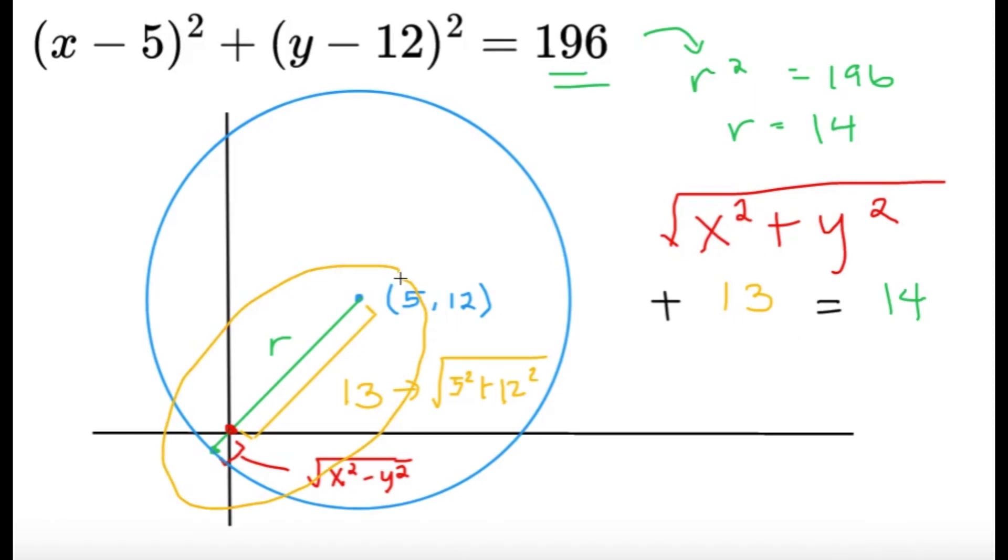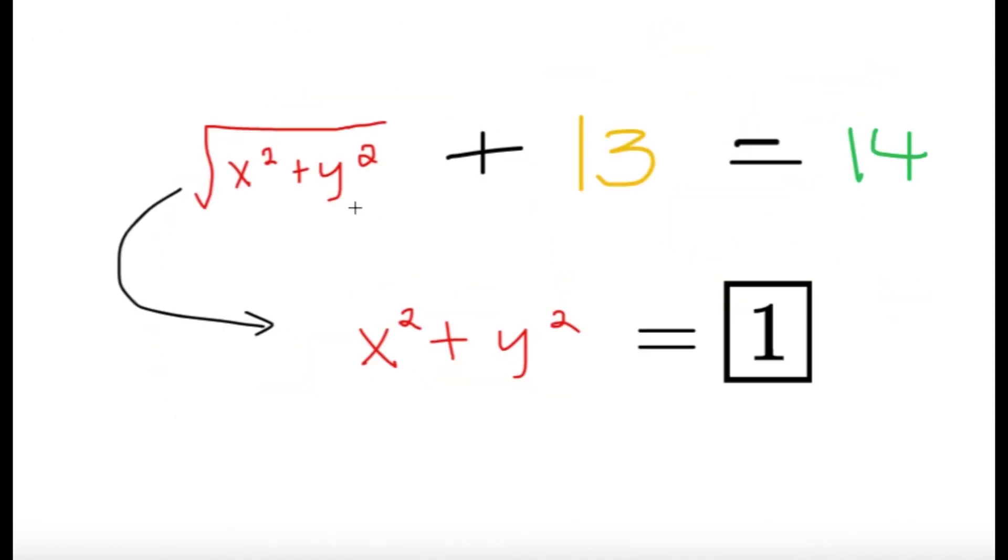Alright, so we can solve for the value of the square root of x squared plus y squared, as you can see here. And in this equation, we can get that square root of x squared plus y squared is going to be equal to 1. And therefore, if I square the result, x squared plus y squared equals 1. And this will be our final answer.